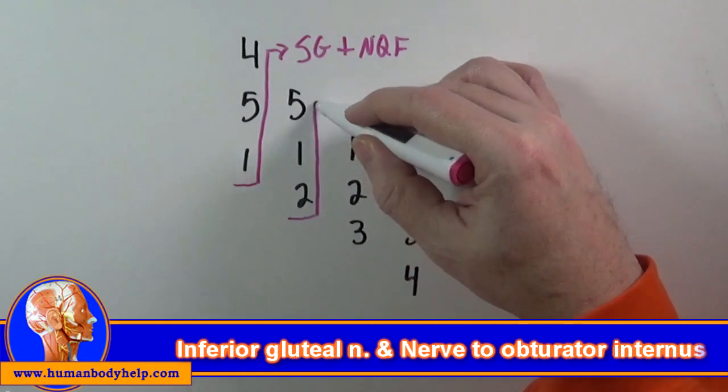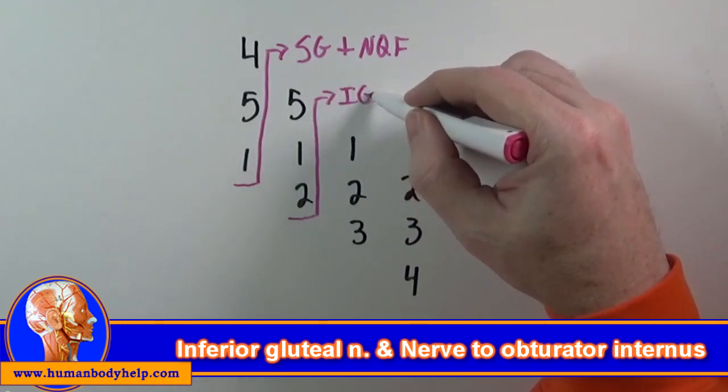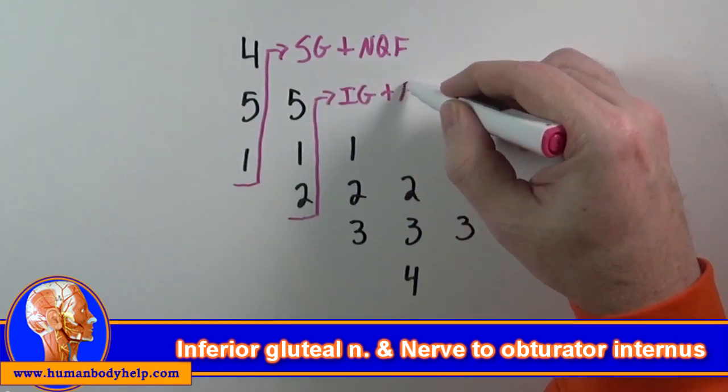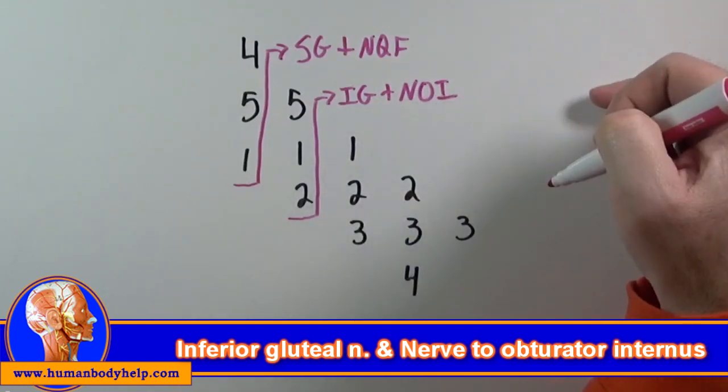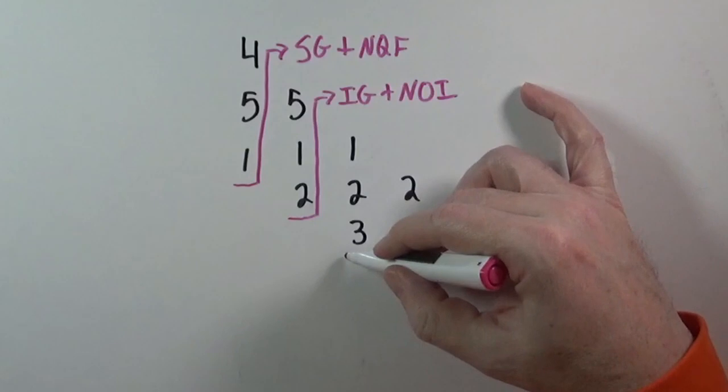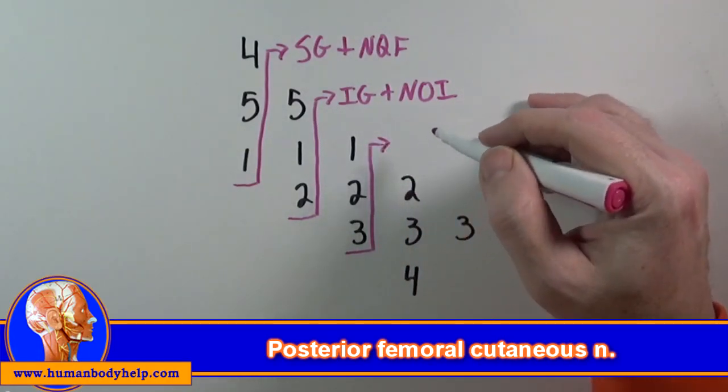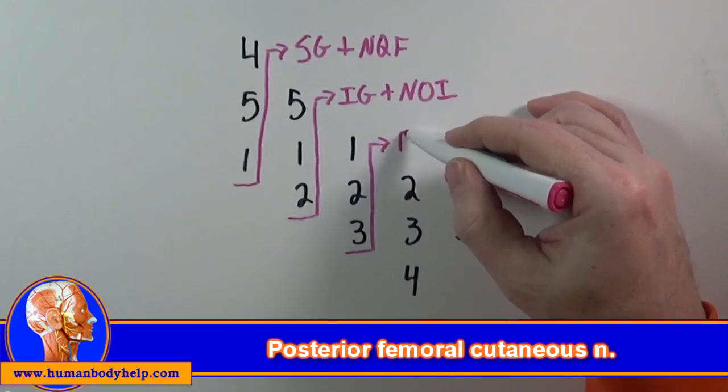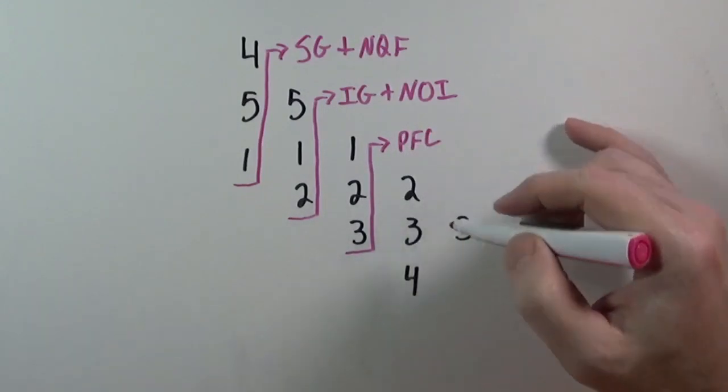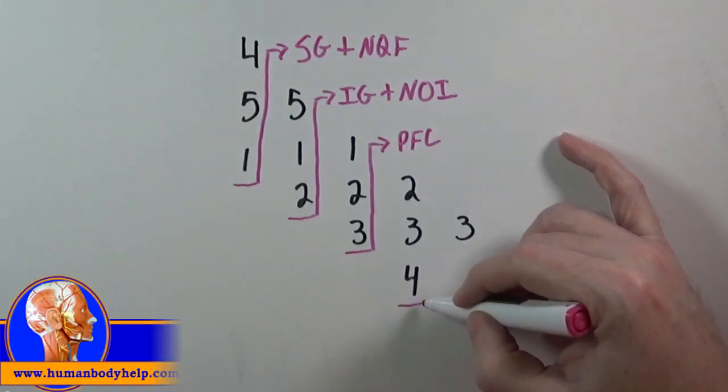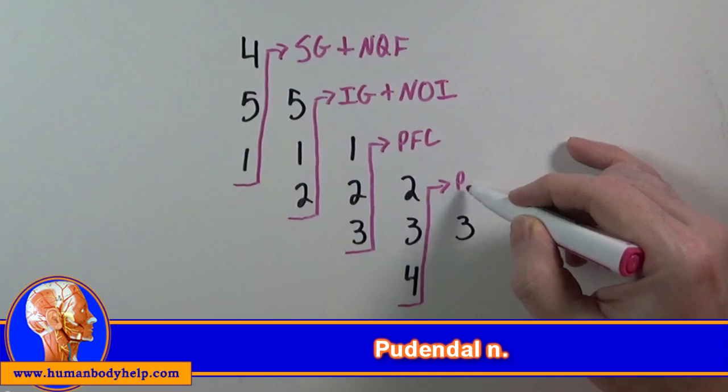This next group, L5, S1, and S2, make the inferior gluteal nerve and the nerve to obturator internus. This next group, S1, S2, and S3, contribute to the posterior femoral cutaneous nerve. S2, S3, and S4 contribute to the pudendal nerve.